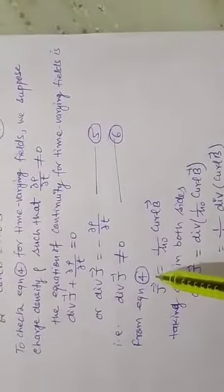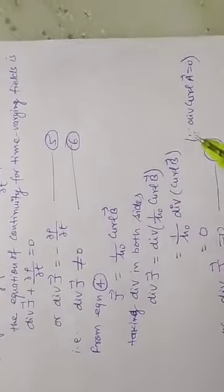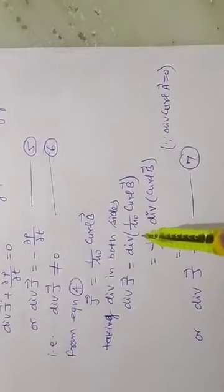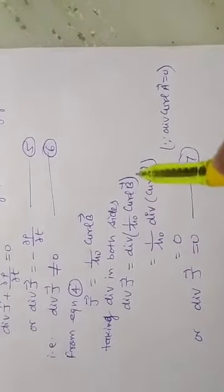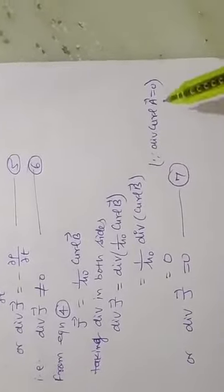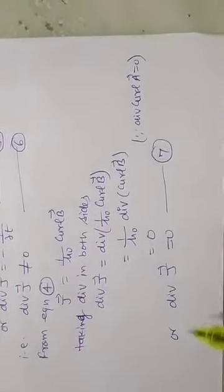From equation number 4, J vector is equal to (1/μ₀) curl B. Taking the divergence of both sides, we get divergence of J vector equals divergence of (1/μ₀) curl B, which equals (1/μ₀) divergence of curl B, and this is zero — since we know that the divergence of the curl of any vector is equal to zero. So divergence of J equals zero.